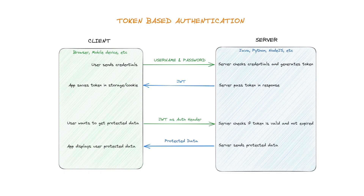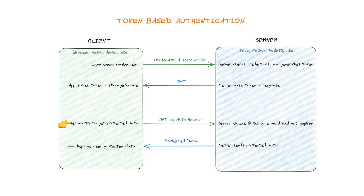Here are the steps involved in token-based authentication. The user enters their credentials in a login form and sends them to the server. The server verifies the credentials and generates a token — in our case, a JWT. The server returns the JWT to the client, and the client saves it in a cookie or local storage. When the user wants to access their profile page, the client includes the JWT in the request header. The server verifies the token signature to ensure its authenticity and returns the protected data.